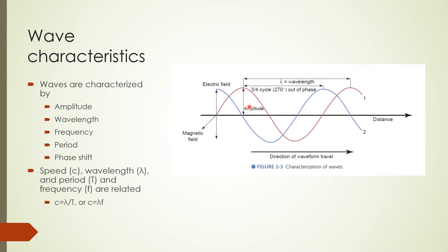Amplitude is the maximum displacement from the equilibrium position. Wavelength is the distance from one peak of the wave to the next peak. Frequency is the number of cycles in one second — if one cycle occurs in one second, the frequency is one cycle per second; if the time is half a second, there will be two cycles per second. The period is the time it takes to make one complete cycle. The phase shift or phase difference is the angle between two waves.